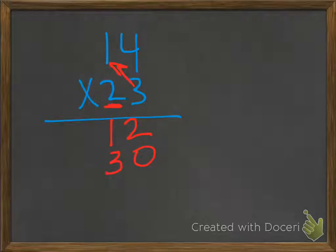Of course, then if you come over here, you get 20 times 4, which is 80. And 20 times 10, you get 200. Add it up.